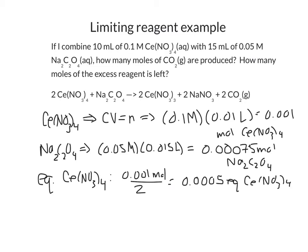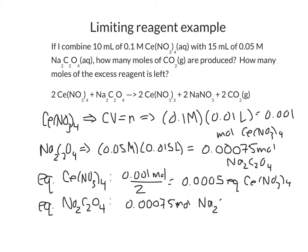For the sodium oxalate, we use up one of these every time we do a reaction, so the equivalents are the same as the number of moles — because it's 1 to 1 for the sodium oxalate. So we have 0.00075 equivalents of sodium oxalate. Let's label this as equivalents rather than moles.